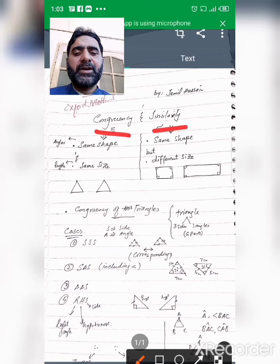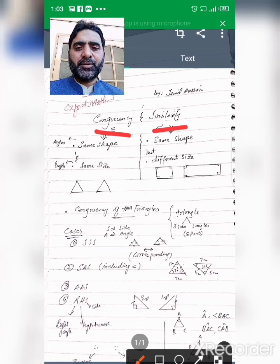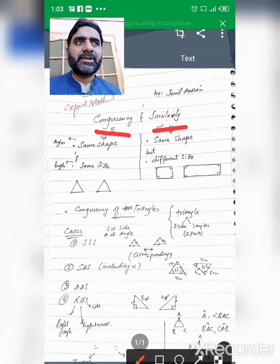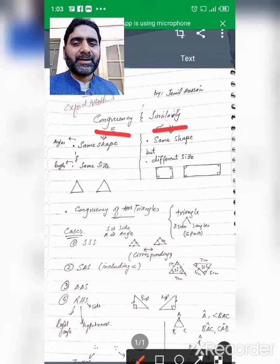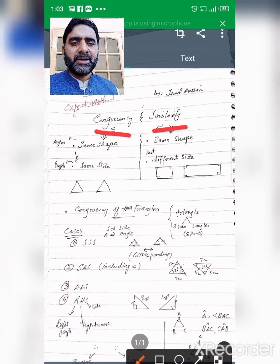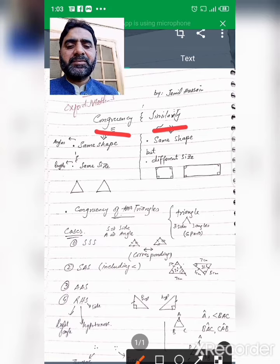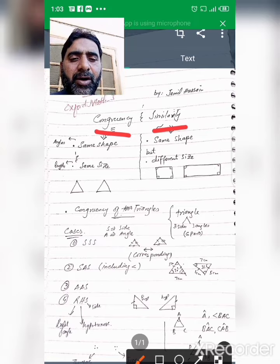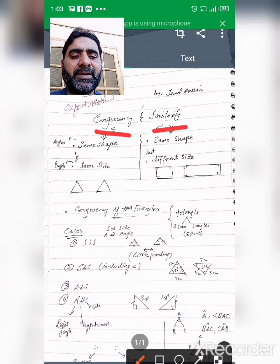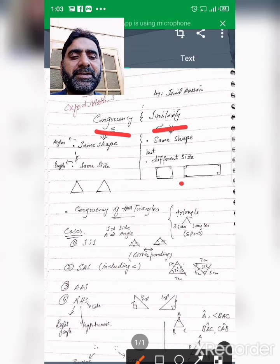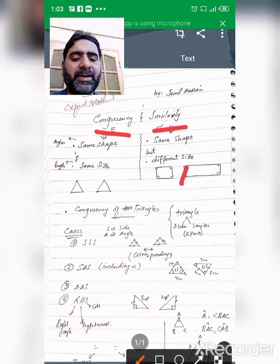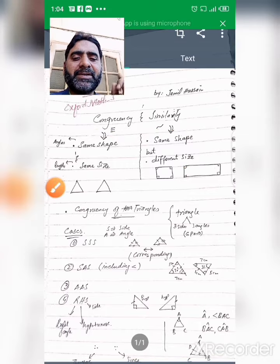If we are discussing congruency and similarity, we have to keep this example. If you have two shapes and they have the same shape and same size, they are congruent. And if you have the same shape but a different size, then we will say that you have similarity.